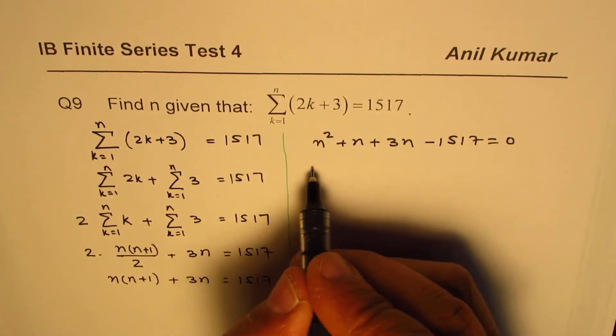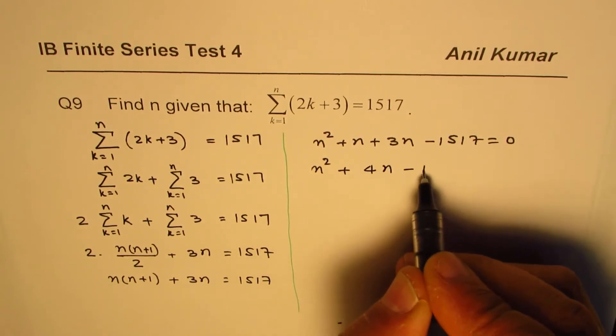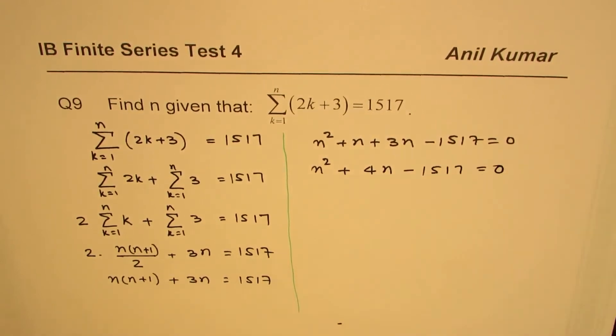Simplify. But before that, let's combine these two. N squared plus 4n minus 1517 equals to 0.